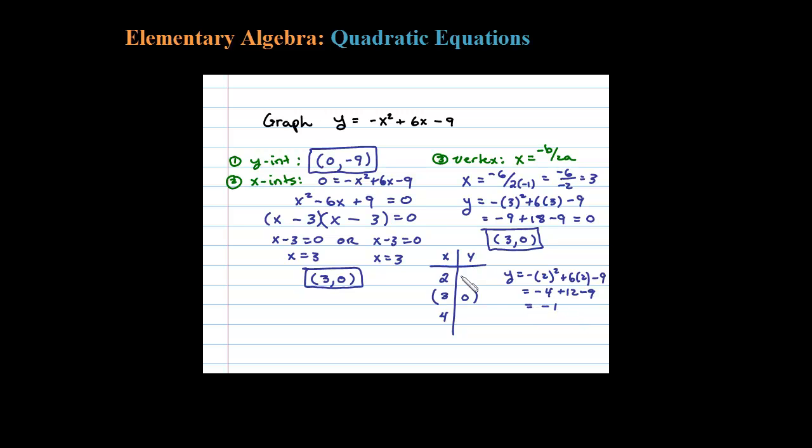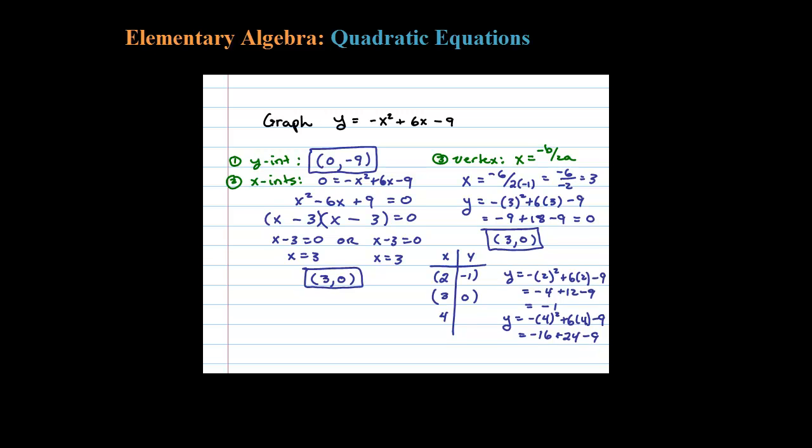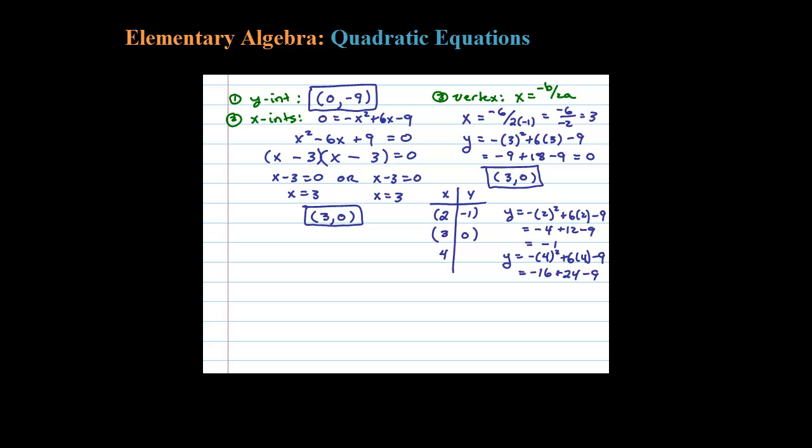Now let's see what happens when I substitute in the 4: negative 4 squared plus 6 times 4 minus 9. Negative 16 plus 24 minus 9, well that equals negative 1 as well.